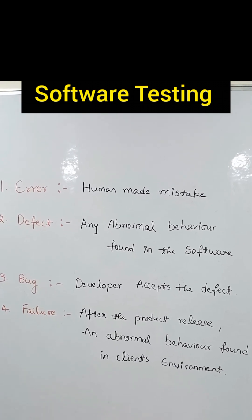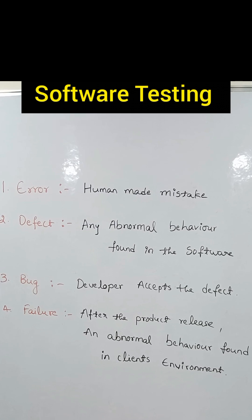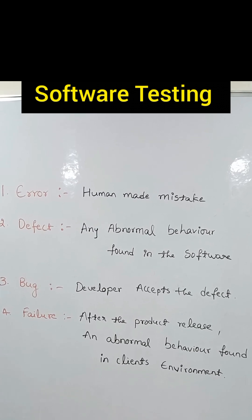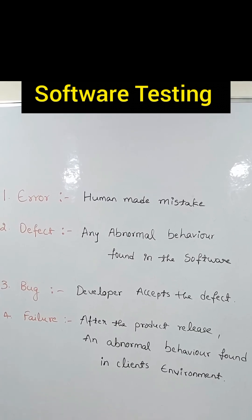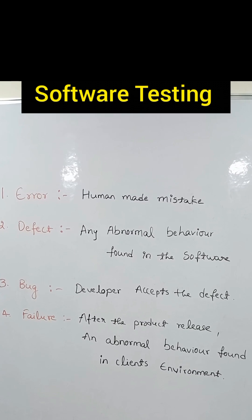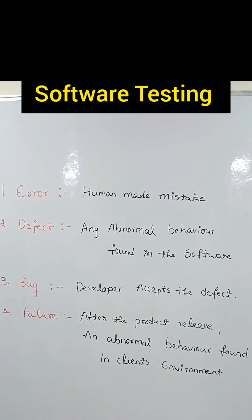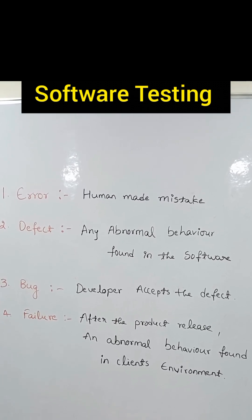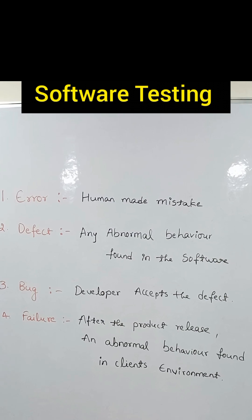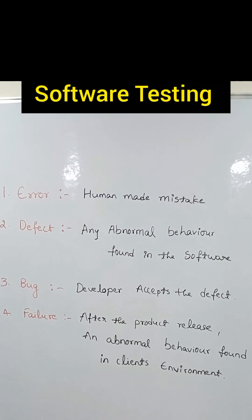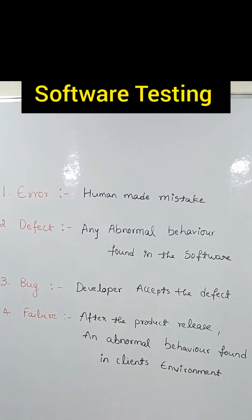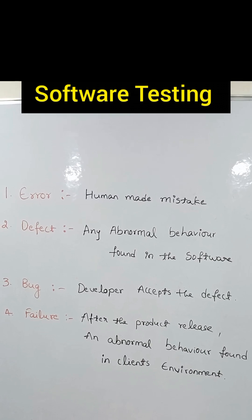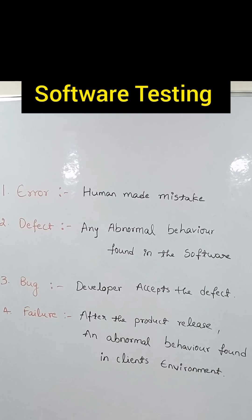Found in the software where the expected behavior is not matching the actual behavior — that's called abnormal behavior, and it is called a defect. After the developer accepts that defect, we call it a bug.